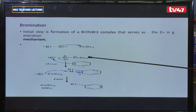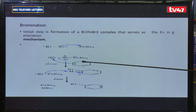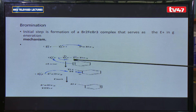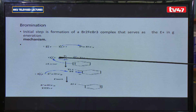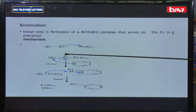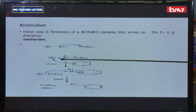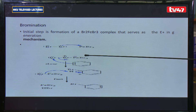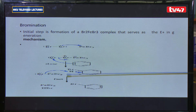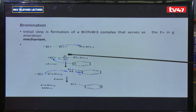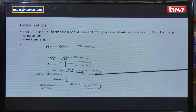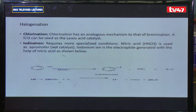For halogens to react with benzene, electrophiles must be formed. What the Lewis acid catalyst does is polarize the halogen molecule so that one of the bromine atoms becomes an electrophile. That electrophile adds itself to the benzene ring in the same way as described in the general EAS mechanism. Chlorination takes place in a similar manner to bromination.